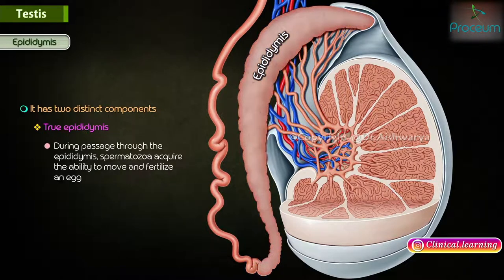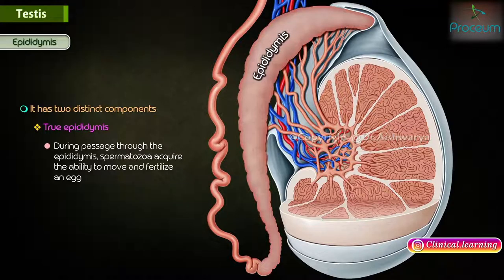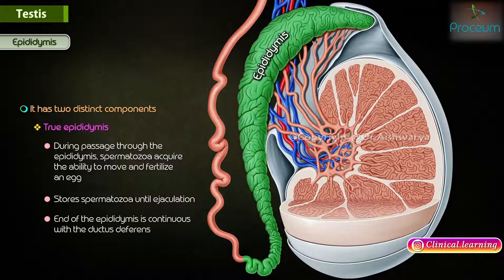During passage through the epididymis, spermatozoa acquire the ability to move and fertilize an egg. The epididymis also stores spermatozoa until ejaculation. The end of the epididymis is continuous with the ductus deferens.